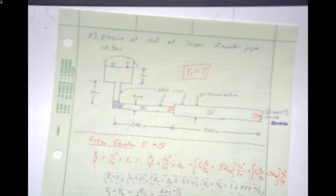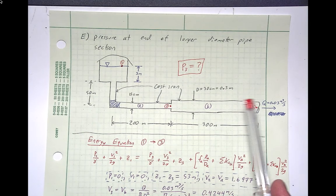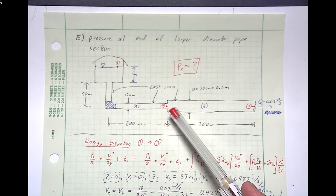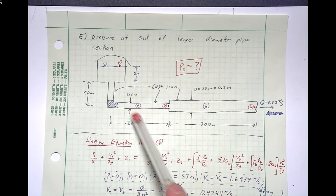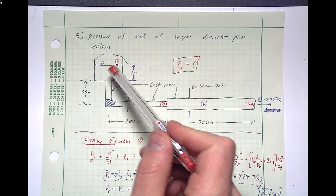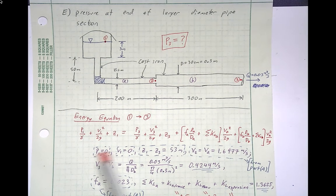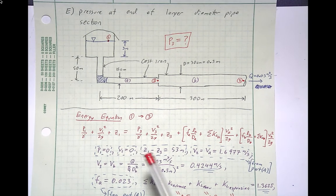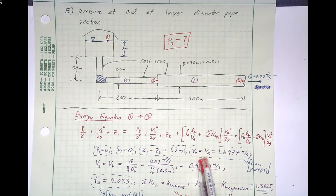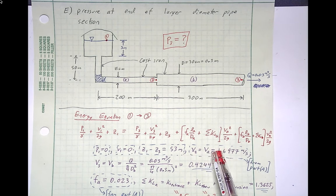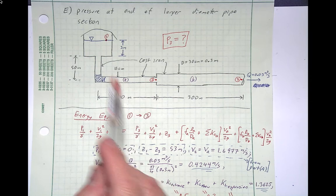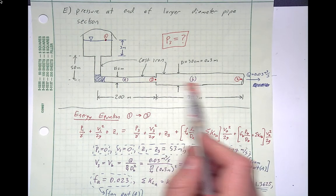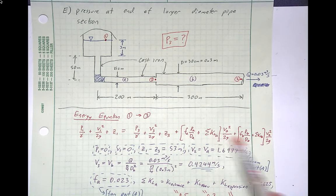For part E, the last step, we go back to the 0.03 volumetric flow rate through the whole system but add a pipe section B with twice the diameter of before, so 30 centimeters. We now apply the energy equation from 1 to 3. The setup looks similar: atmospheric pressure, no velocity at the tank top, 53-meter elevation difference. The velocity at point 2 equals the velocity through pipe segment A. We must keep the head losses for segments A and B separate because their velocities are different.